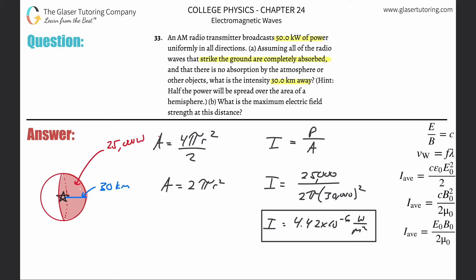That takes care of that. Letter B then says: What is the maximum electric field strength at this distance? So we have to relate intensity to electric field. We're going to use this formula over here - that tells us that the intensity, the average intensity, is going to be equal to the speed of light multiplied by the permittivity of free space multiplied by the peak electric field strength squared divided by 2.